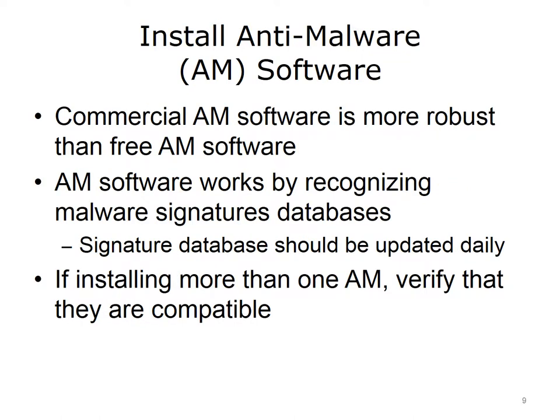After securing the operating system, another safe practice is to secure your files by installing anti-malware (AM) protection software. Commercially available AM software is more robust than free AM software; commercial software will catch and quarantine almost all trojan, virus, and worm attacks before they do any harm. AM software works by recognizing patterns, known as signatures, and stopping bad behavior. Signatures should be updated daily. Before installing more than one AM program, verify that they will work together, as some programs do not work well when installed on the same system.